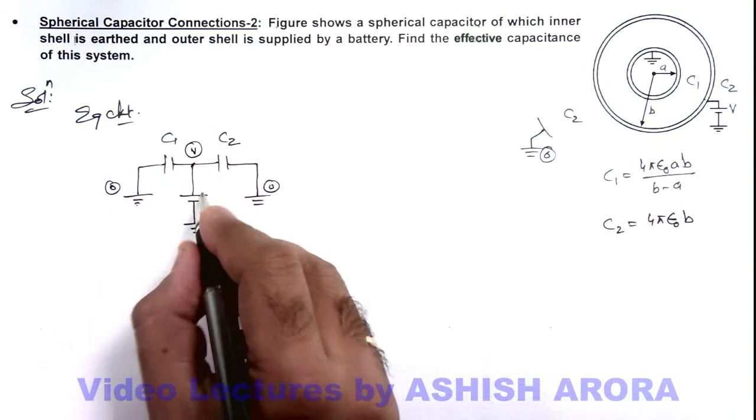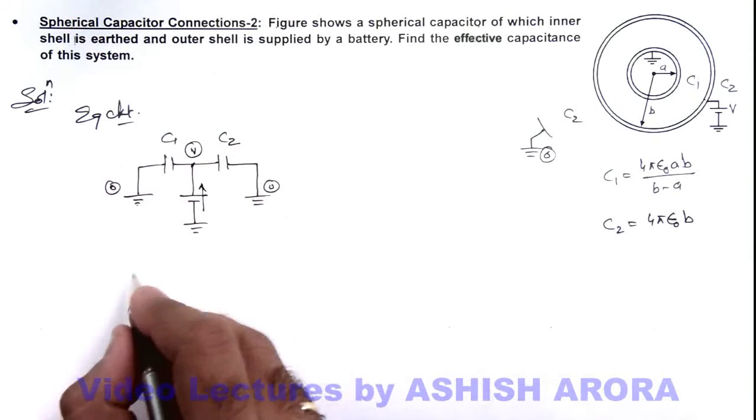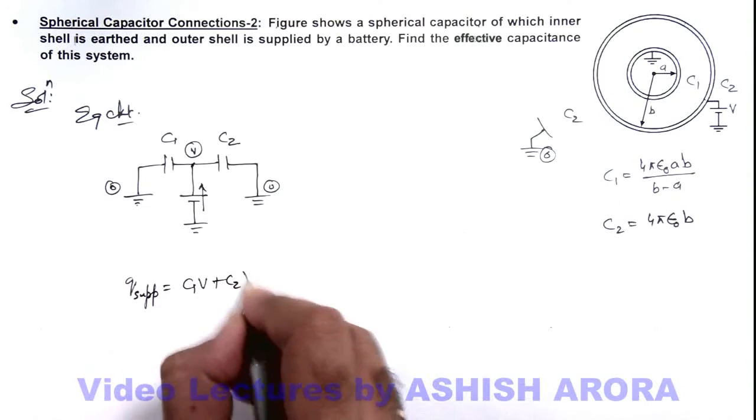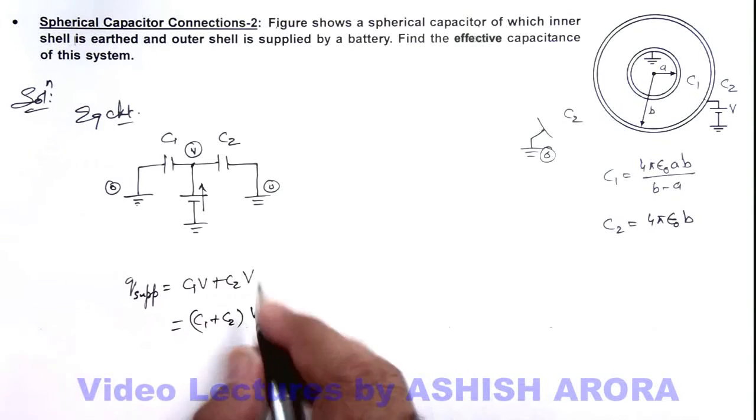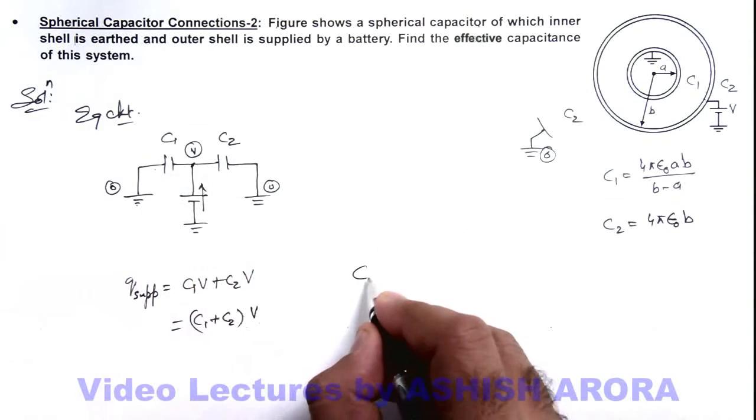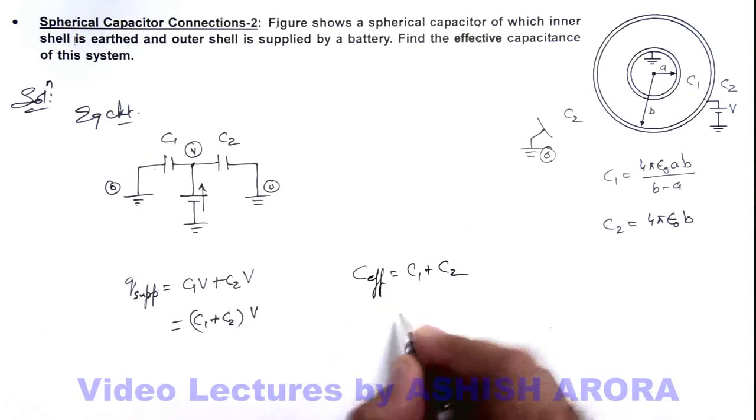So here we can see the charge which battery will supply will be to both of these capacitors. So the charge supplied by battery here will be c1v plus c2v, that is (c1 + c2) into v. And here we can consider the two capacitors are connected in parallel.